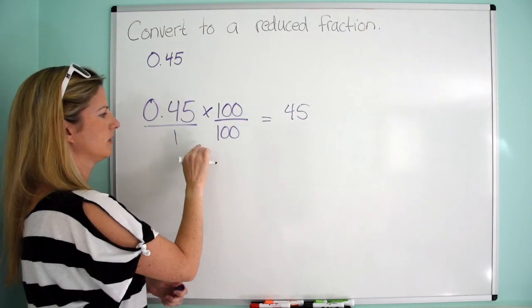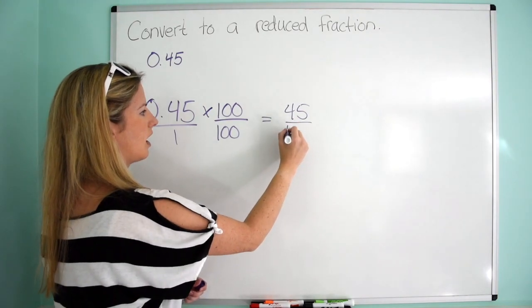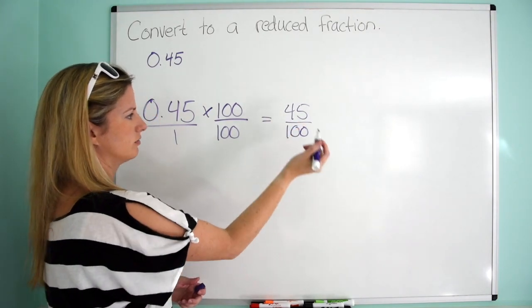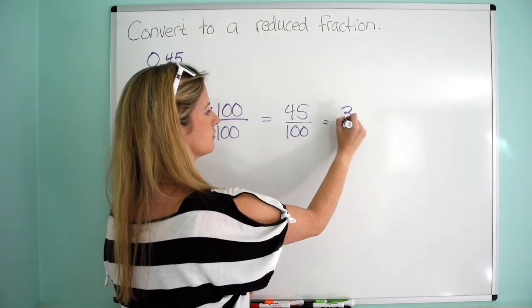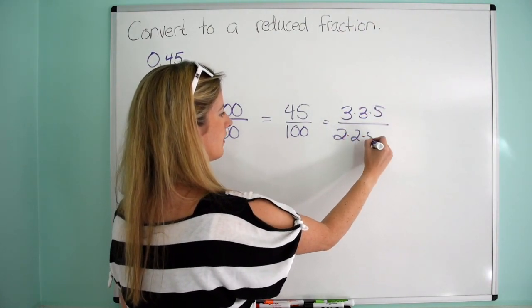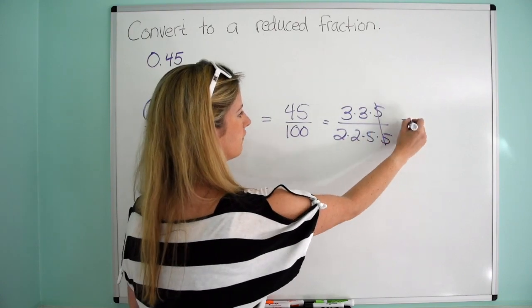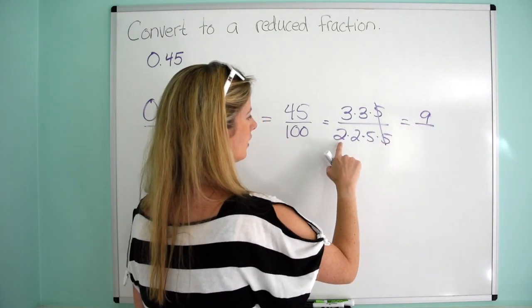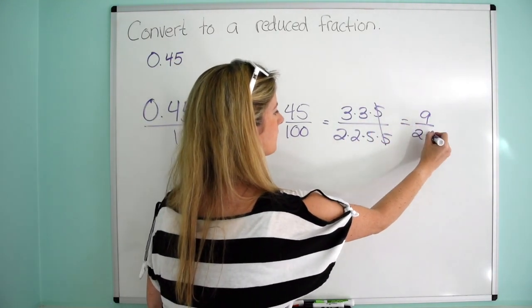And then remember, this is technically over 1, so then that's going to be over 100. And then you can kind of reduce it from there. So 45 is 3 times 3 times 5, and 100 is 2 times 2 times 5 times 5. Check your leader 5s. You are looking at 9 over 20.